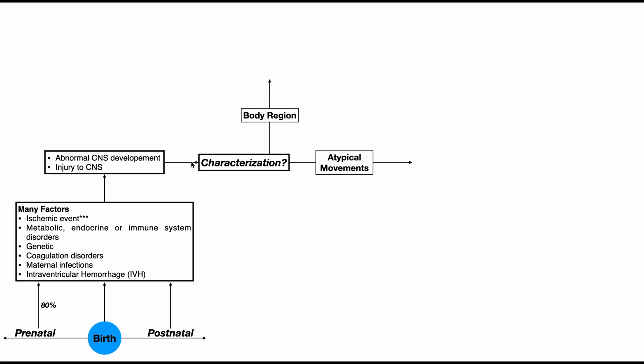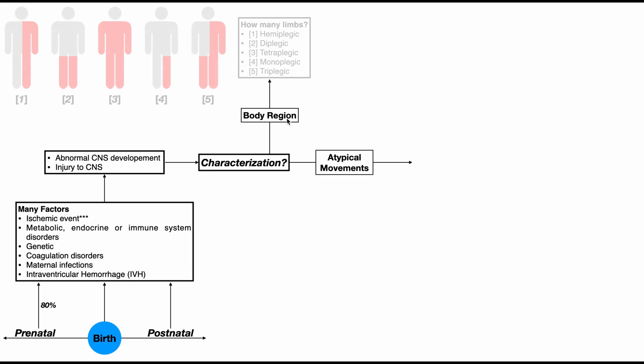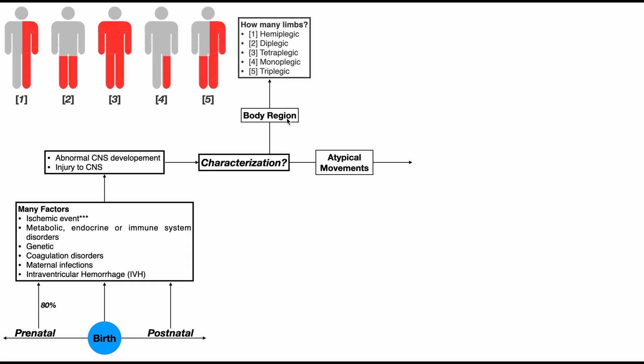How do we characterize cerebral palsy? There are two ways: we can do it based on the atypical movements, or we can do it based on body region — which parts of the body are affected.